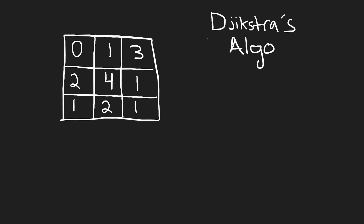There's a greedy algorithm called Dijkstra's algorithm, and we can do a modified version of it, which gives us a time complexity of n squared times log n. This algorithm requires a minimum heap, and it's essentially a breadth-first search but using a priority queue instead of a regular queue.